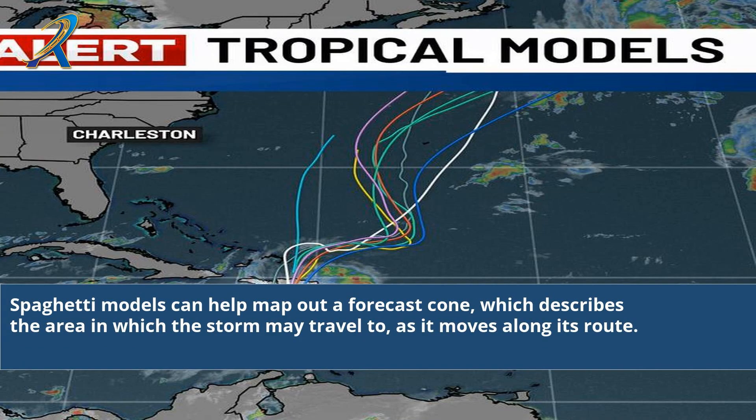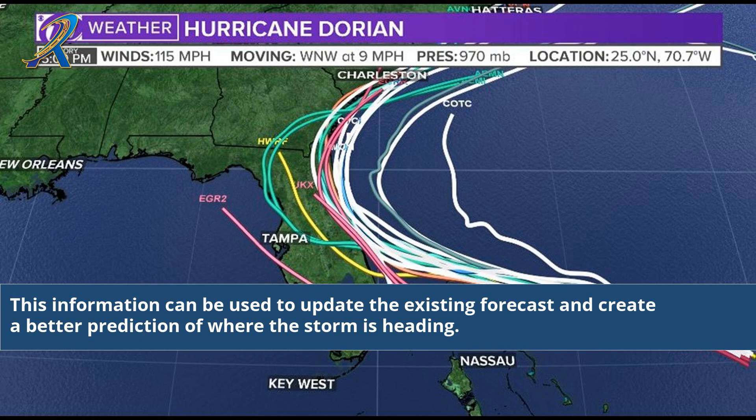Spaghetti models can help map out a forecast cone, which describes the area in which the storm may travel to as it moves along its route. This information can be used to update the existing forecast and create a better prediction of where the storm is heading.